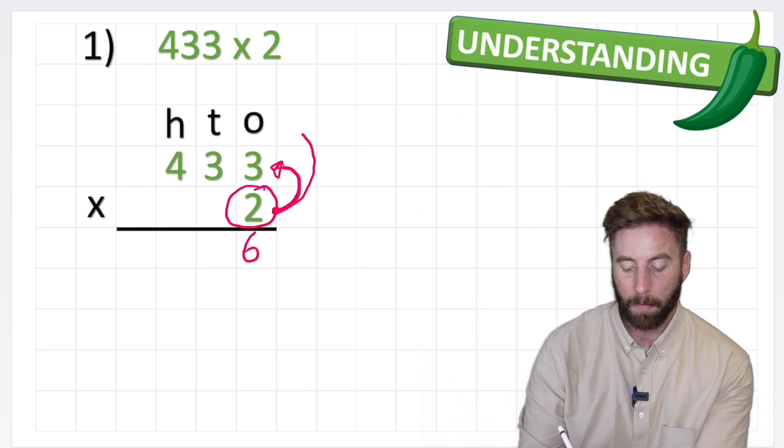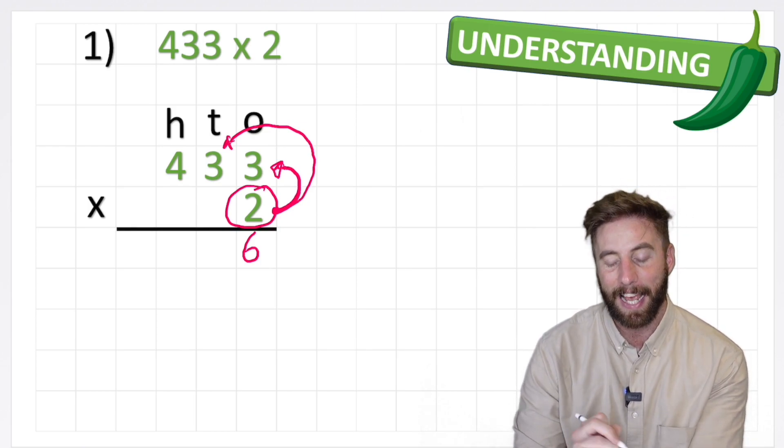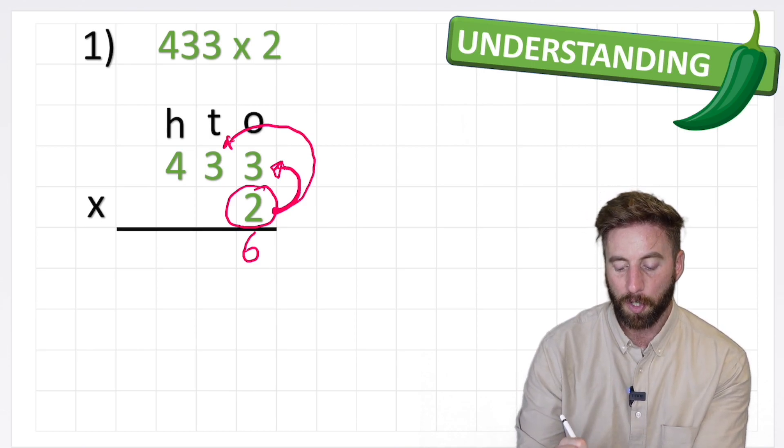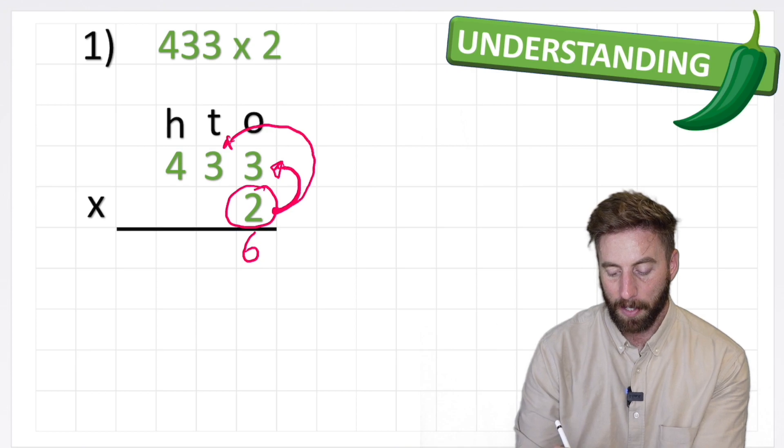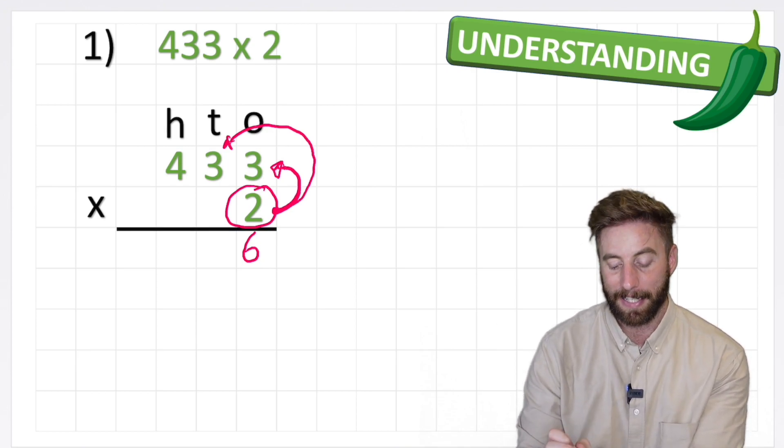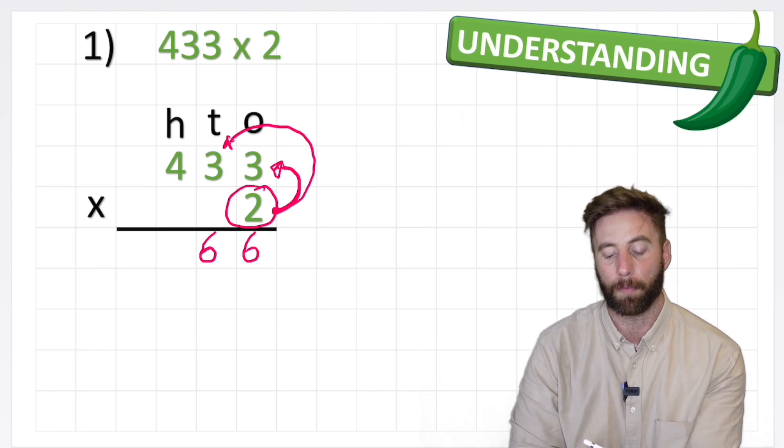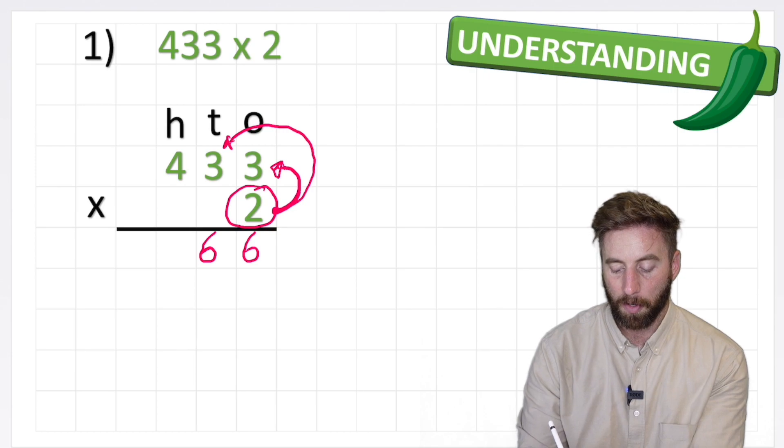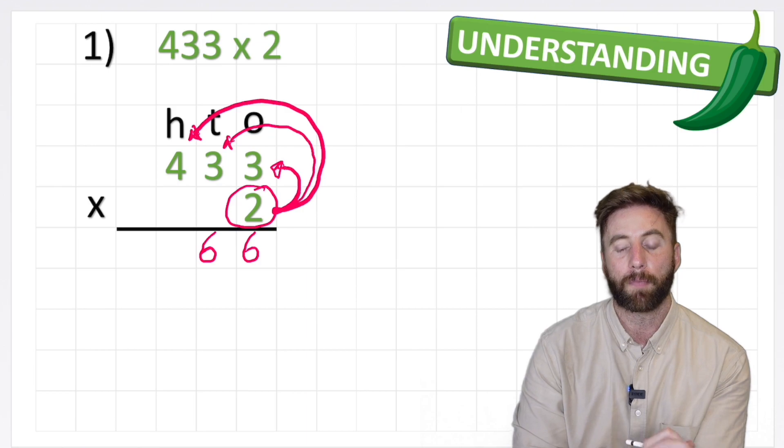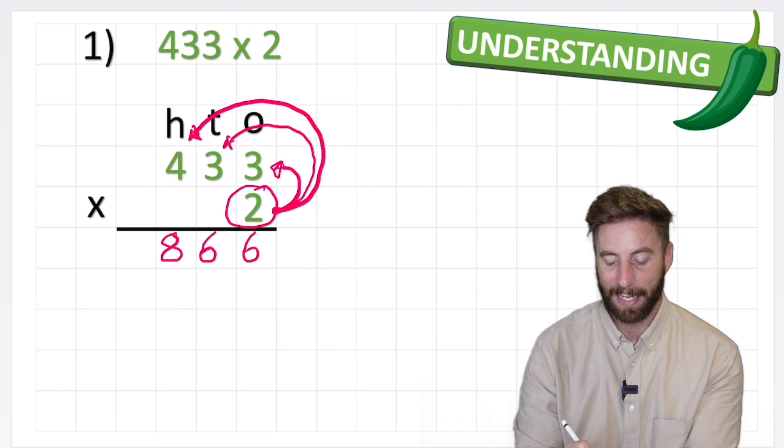Now I'm multiplying 2 by 3, but it's not a 3, it's 30 because it's in the tens column. So my answer needs to go in the tens column too. 2 times 3 is 6, but it's not a 3, it's a 30. So 2 times 30 is 60, and I can represent that by putting a 6 in the tens column. And finally, 2 times 4, but remember it's a 400. So 2 times 4 is 8, or 800, represented with an 8 in the hundreds column.